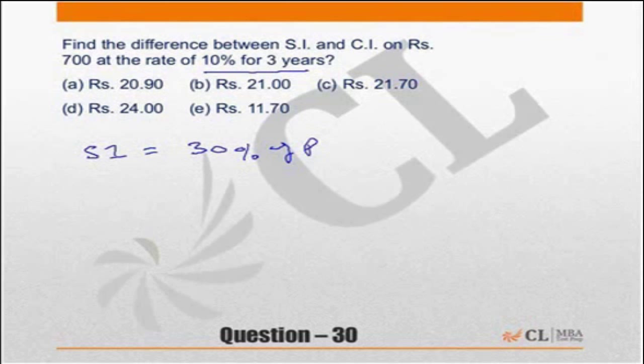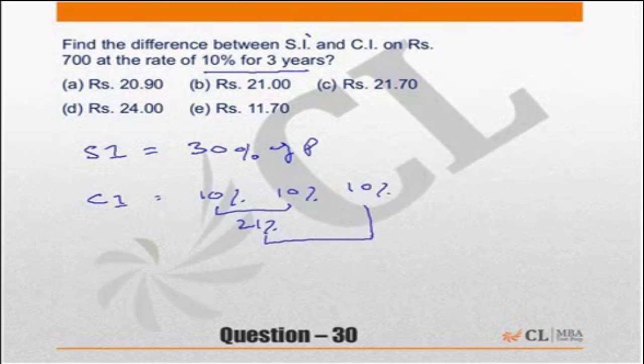If the rate of interest is 10%, for 3 years in simple interest you get 30%. Compound interest 10% for 3 years is nothing but 3 successive increments of 10%. Two successive increments of 10% is nothing but 21%. So 3 successive increments will be equal to 21 and 10. So 21 plus 10 is 31, 21 plus 10 plus 21 times 10 divided by 100 which is equal to 33.1%.